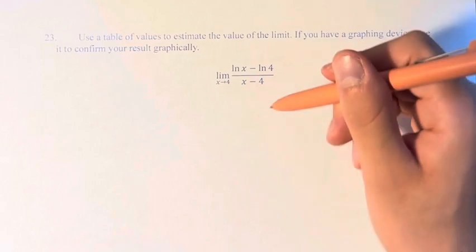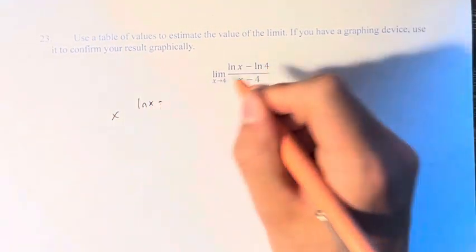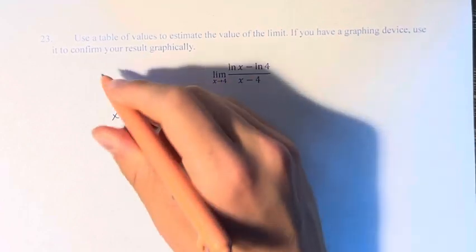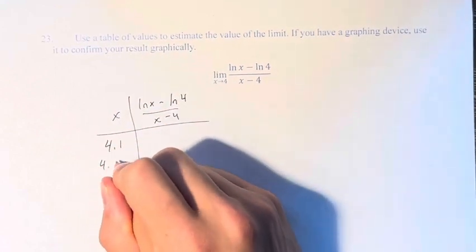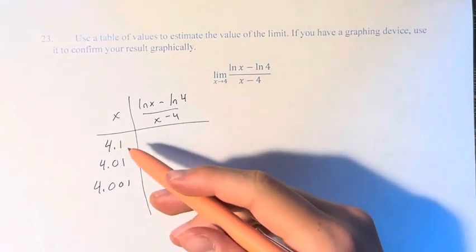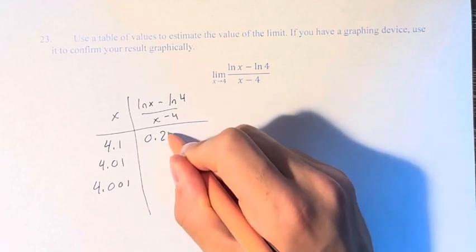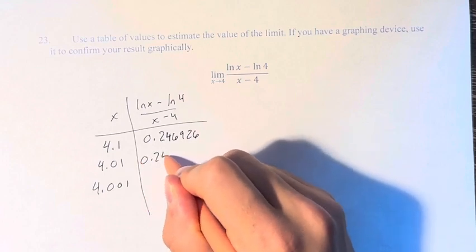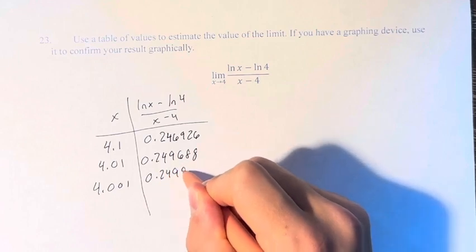So we have to plug in values into this fraction of values approaching 4. First, we have approaching 4 from the right. So that's going to be 4.1, 4.01, and 4.001, getting closer and closer to 4. If we plug these values in, we get 0.246926, 0.249688, and 0.249969.